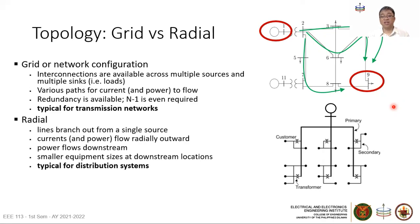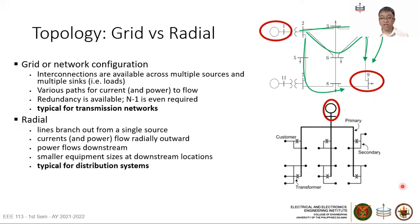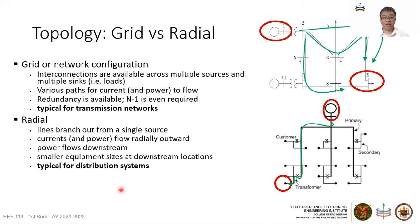We have a Luzon grid, a Visayas grid, and a Mindanao grid. If power is needed in Metro Manila, there are multiple sources and multiple paths for power to get there. On the other hand, if we have a single source with a single path for power delivery, that is a radial configuration. The root is the only source, and there is only one path for power to flow. This is much simpler, cheaper, but less reliable. If the load is not very critical — such as our house — we may not need multiple sources or paths, making radial critical for distribution systems.